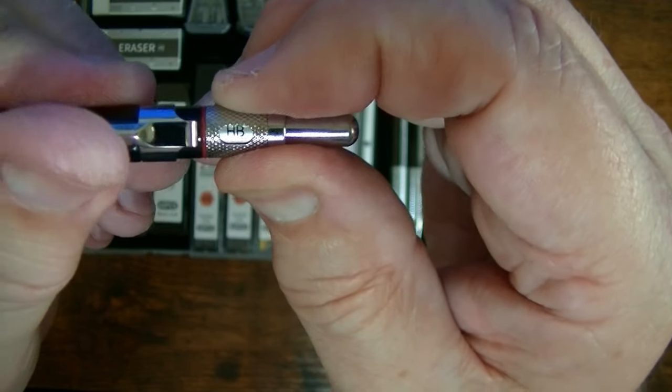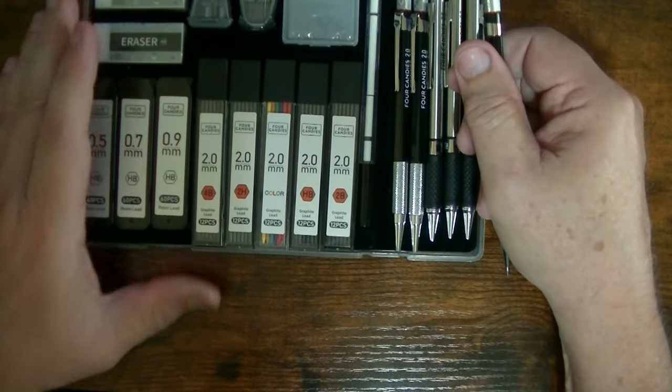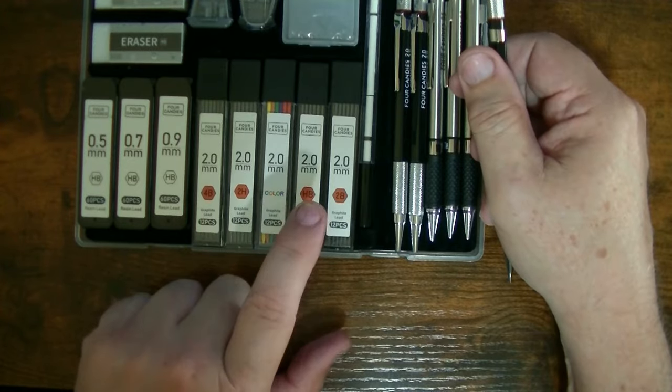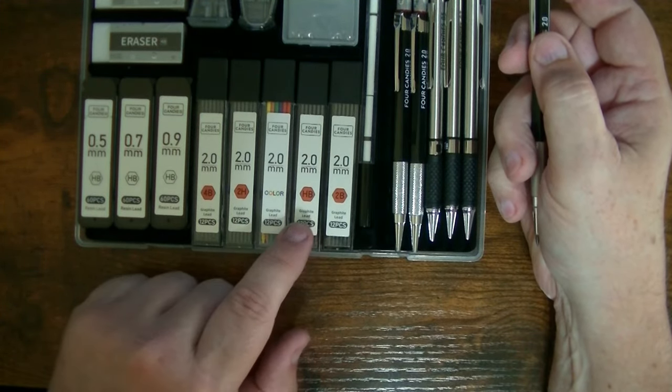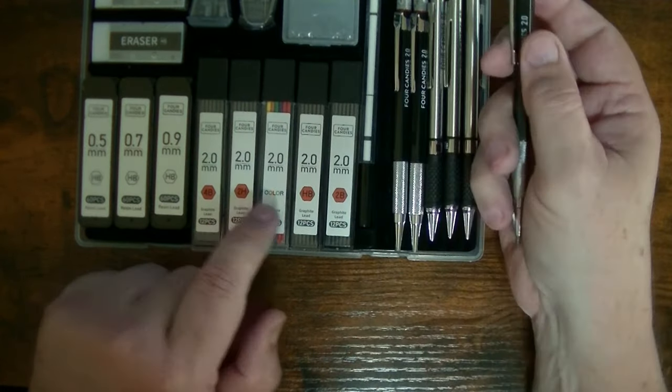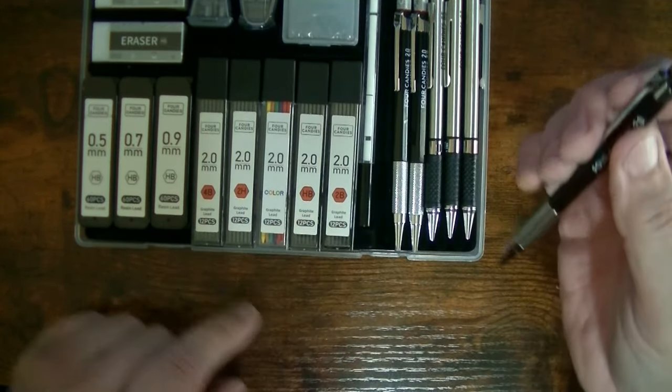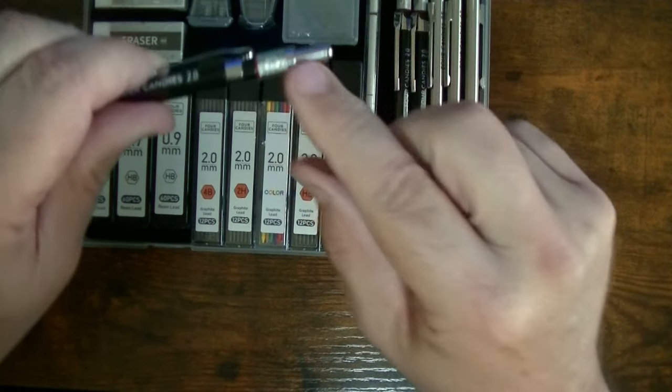But there is no 4B. So let's take a look at this. We have HB, which we can set it to HB. We have the 2H, which we can set this to 2H. We have the 2B, which you can set this to 2B.